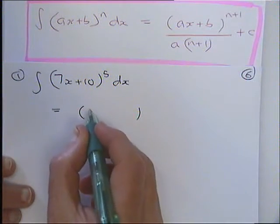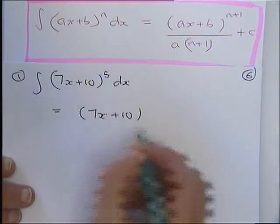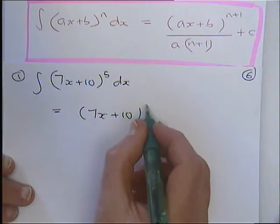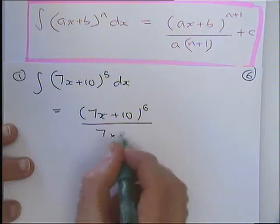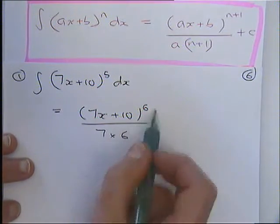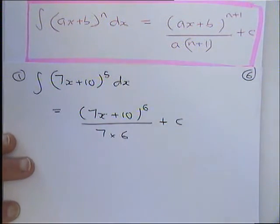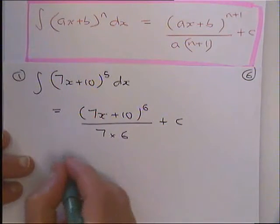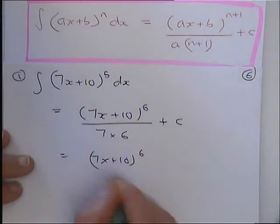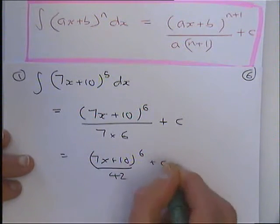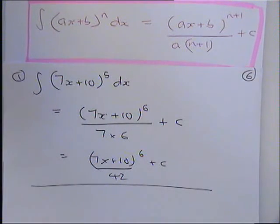So what am I going to write in the brackets? Yeah, added one on to the power. That's right. Times by the coefficient of x, and I heard you say as well, the plus c. Yeah, that's right. So the final answer there, 7x plus 10 to the power of 6 over 42 plus c. That's right.